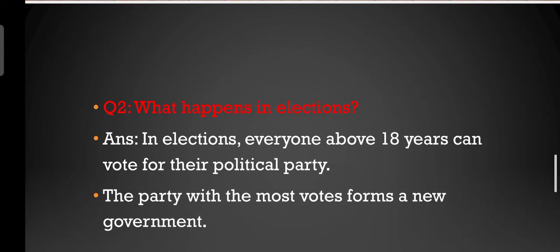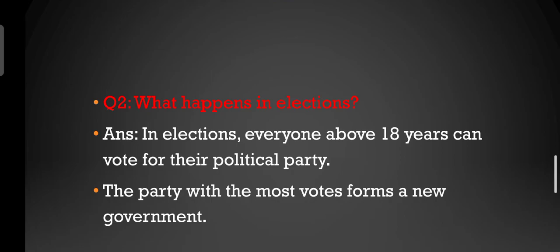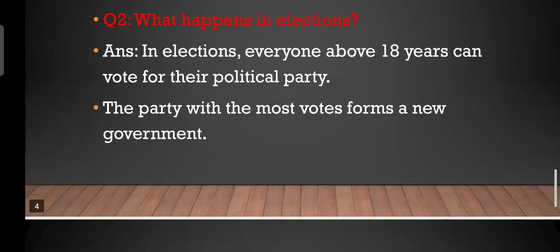Question number two: What happens in elections? In elections, everyone above 18 years can vote for a political party, and the party with the most votes forms a new government.